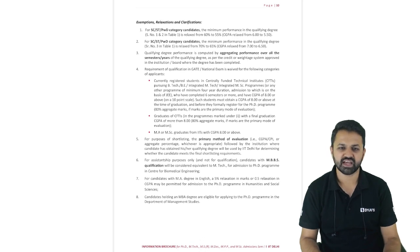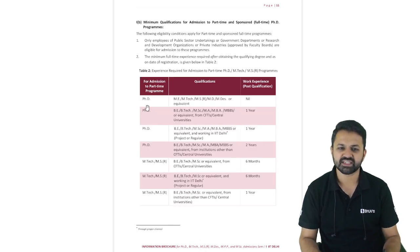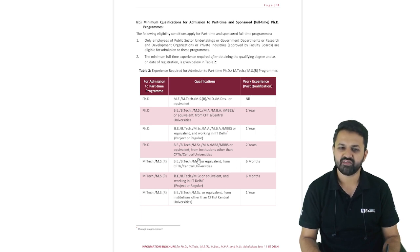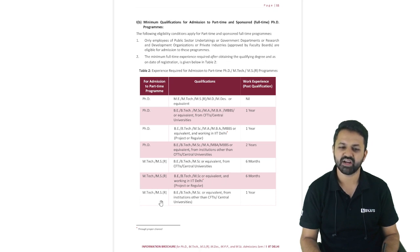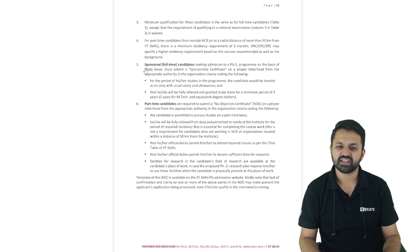There are some relaxations given for the PhD program. The qualification is M.E./M.Tech, or B.Tech with a valid GATE score plus work experience of one to two years. For admission to the part-time PhD program, you should have the relevant experience along with the required qualification. For part-time M.Tech, B.Tech is required with six months of experience. These are the essential minimum qualifications.